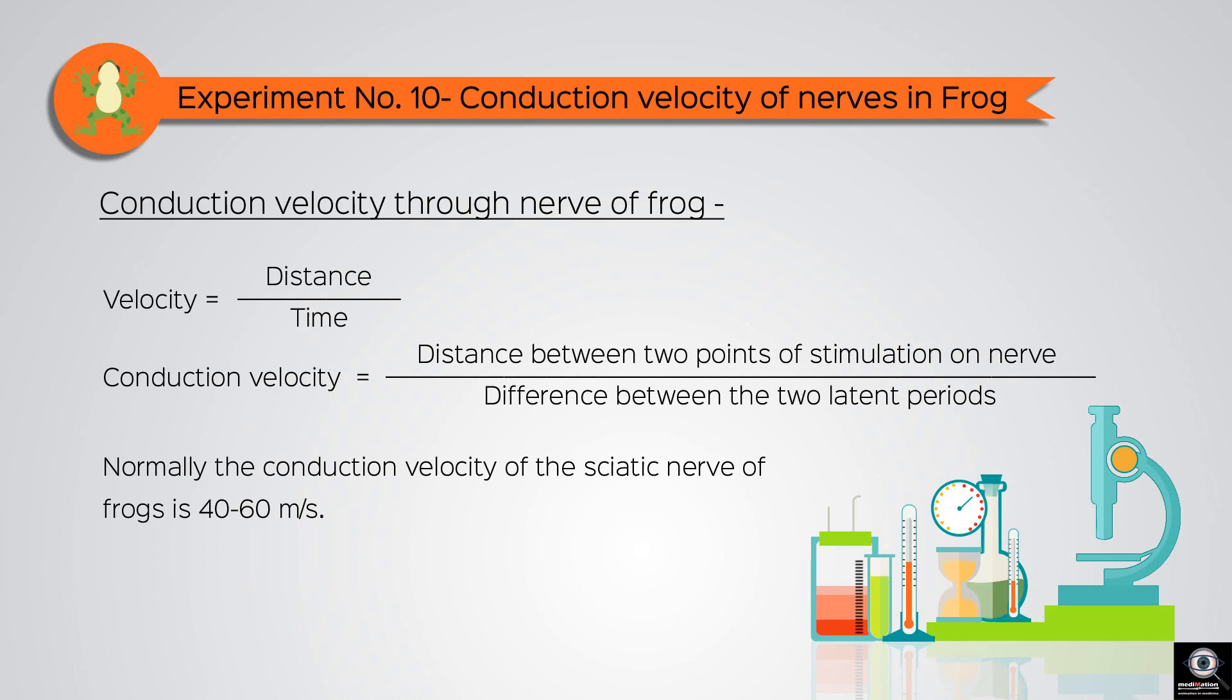Normally, the conduction velocity of the sciatic nerve of the frog is 40 to 60 meters per second.